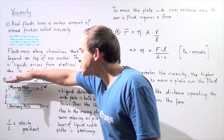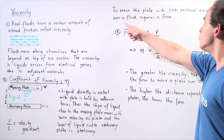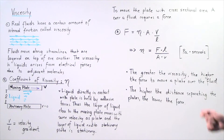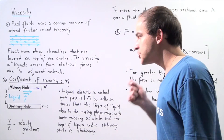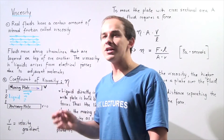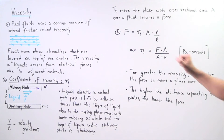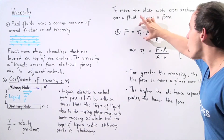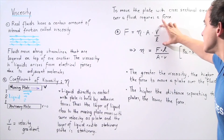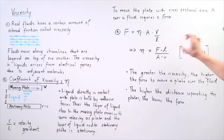In order to move this plate along the surface of the liquid, that requires a force. To move the plate with cross-sectional area A over a certain fluid with some viscosity requires a force. The relationship between the coefficient of viscosity, the velocity gradient, and the cross-sectional area of the plate and the force is: force equals the coefficient of viscosity multiplied by the cross-sectional area multiplied by the velocity gradient. If we solve for the coefficient of viscosity, we get the following result.